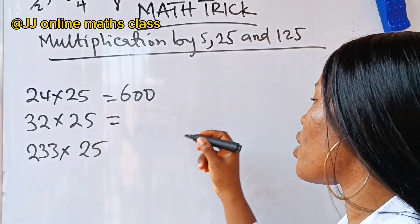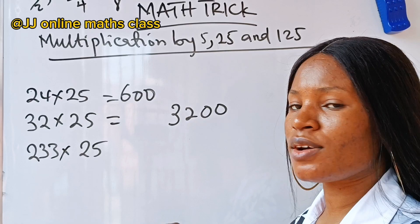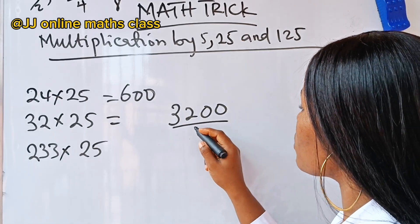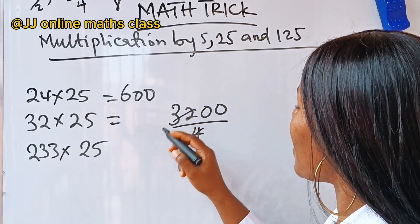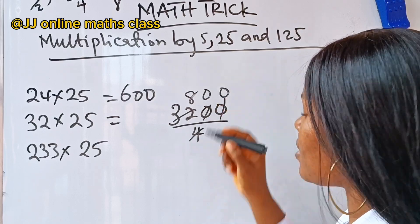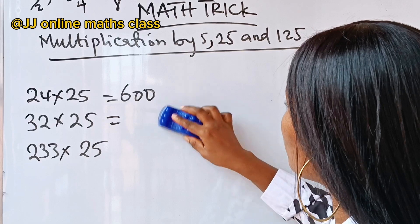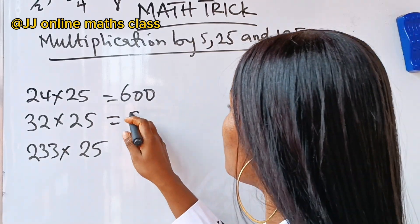Now, for this one, it's going to be 32 multiplied by 100 divided by 4. When 4 divides 32, you have 8. Divide this, you have 0. Divide this, you have 0. So, it means that the solution is 800. So, we have 800 here.